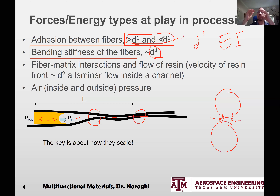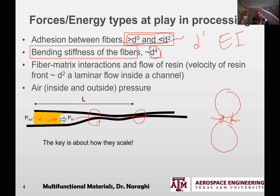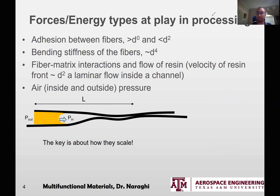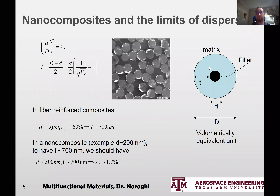Now consider Poiseuille's law: this fluid — the resin, the matrix — wants to flow in between the fibers. Say we're talking about a thermoset that is initially liquid; it needs to fill those gaps. For nanocomposites it becomes much, much more difficult because the gap is going to be smaller, unless something else happens.